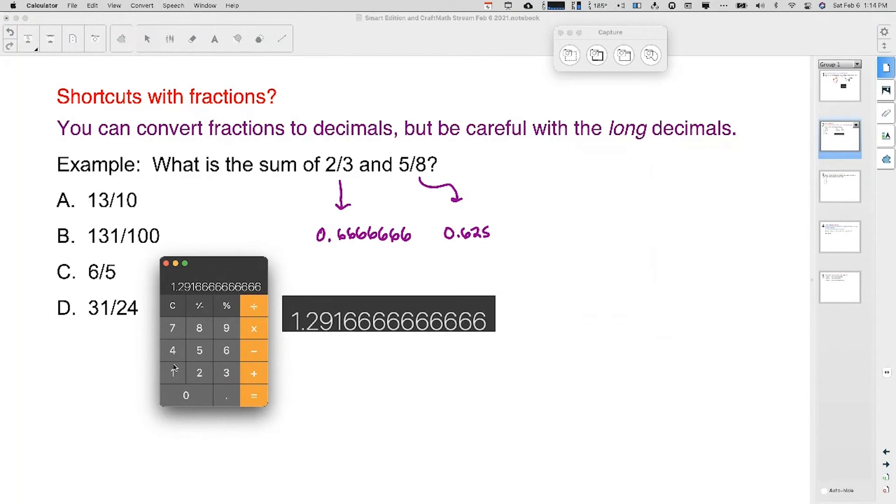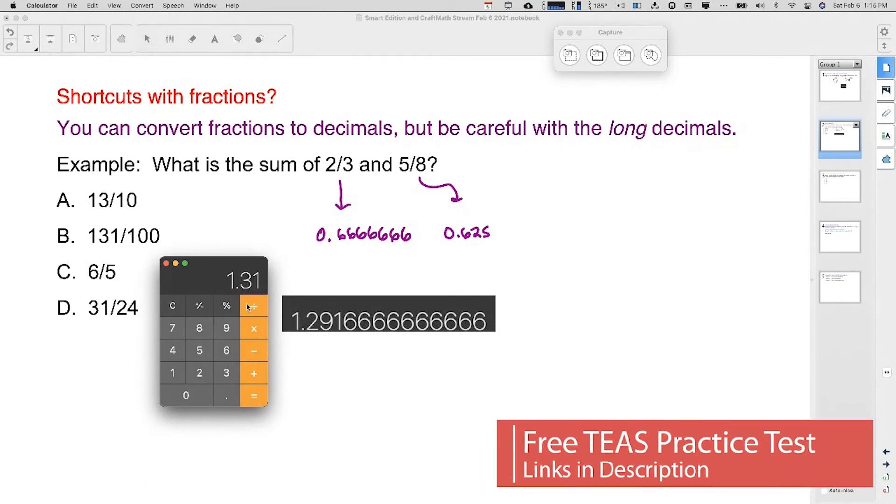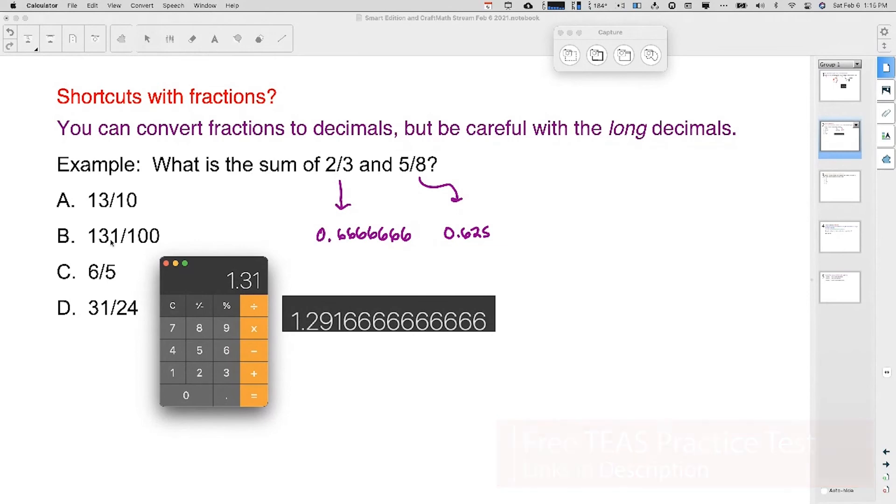13 over 10. If I take 13 divided by 10, that gives me 1.3, but this is not 1.3. It's close, I admit that. So let's see if we can get a little bit closer. 131 divided by 100. That's 1.31. Okay, I don't want to mess with that.